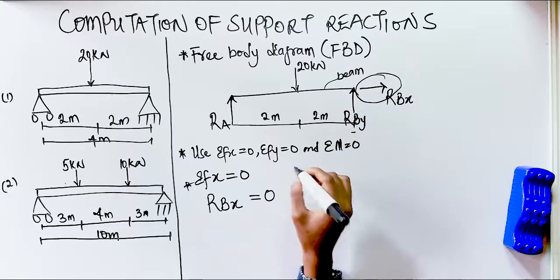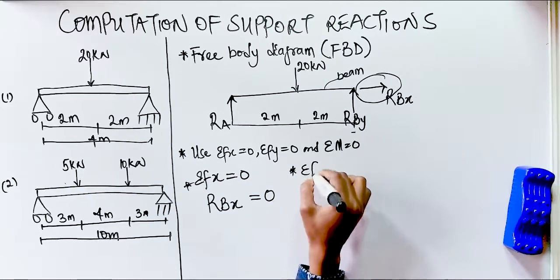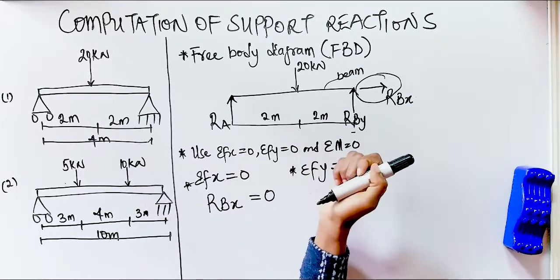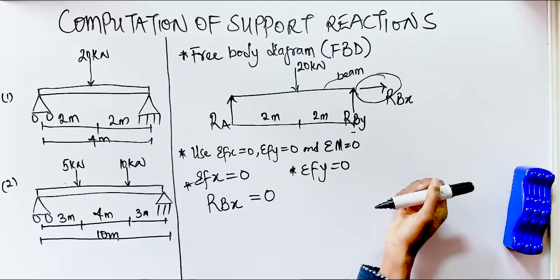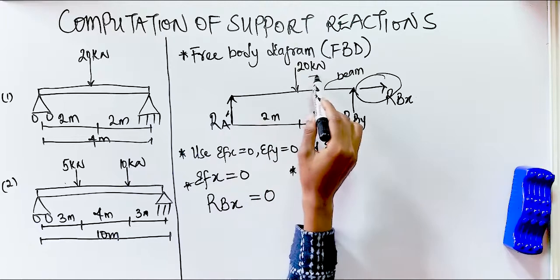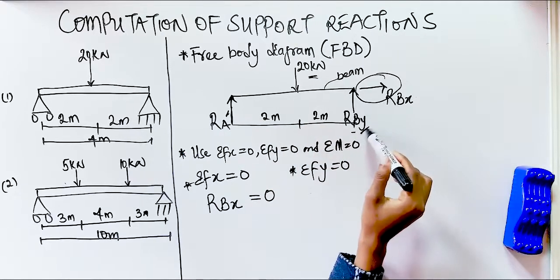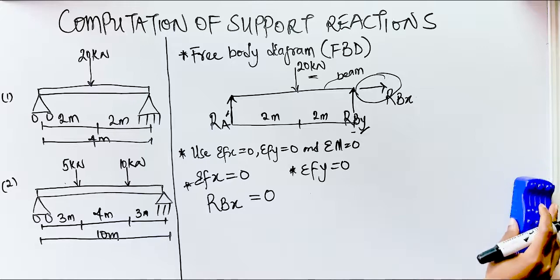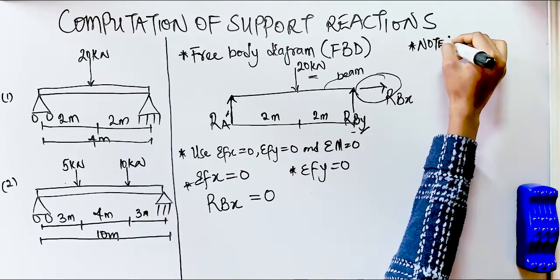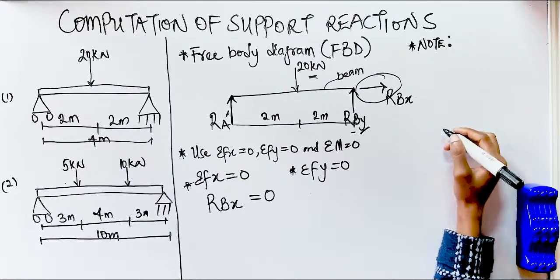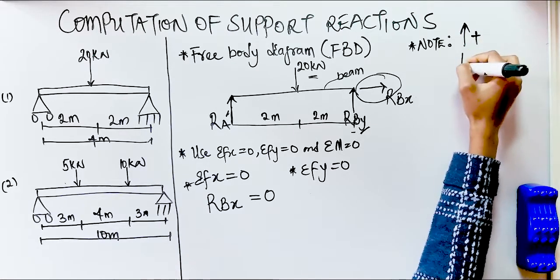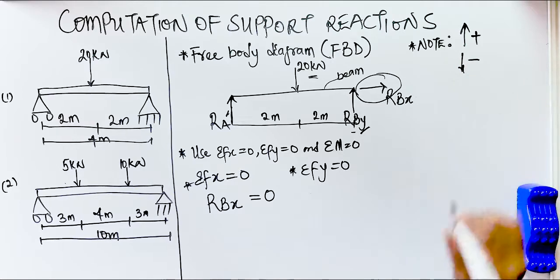Moving on to summation of Fy = 0, this means all vertical forces must be equated to zero. Looking at the free body diagram, we have three vertical forces: Ra, the 20 kilonewton point load, and Rby. Another important note: forces acting upwards are treated as positive, while forces acting downwards are treated as negative.